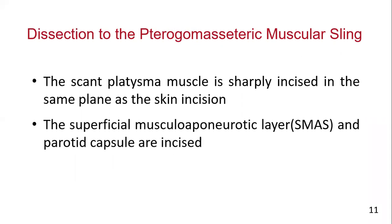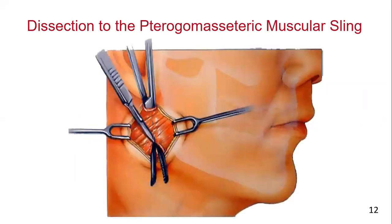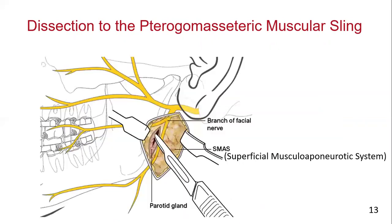At this point, the superficial musculoaponeurotic layer (SMAS) and parotid capsule are incised. Let's see how it is done. Sharp dissection is performed through the thin platysma muscle, superficial musculoaponeurotic system, and the parotid capsule after undermining with a hemostat. Blunt dissection then begins within the gland in an anteromedial direction towards the posterior border of the mandible. Here you can see the subcutaneous tissue has been undermined, exposing the SMAS into the parotid gland.